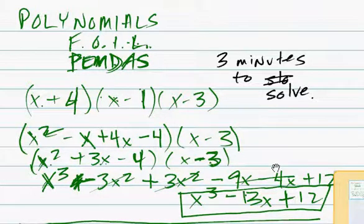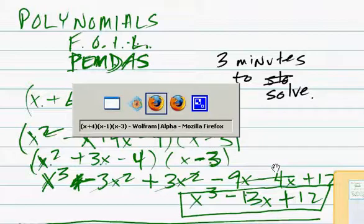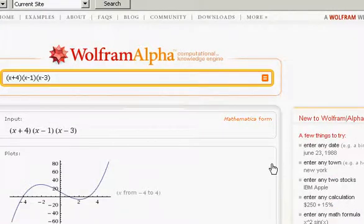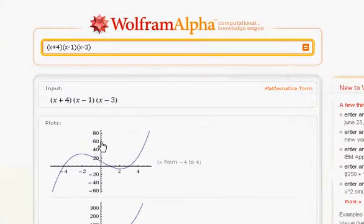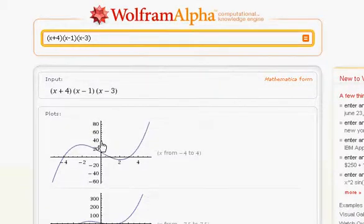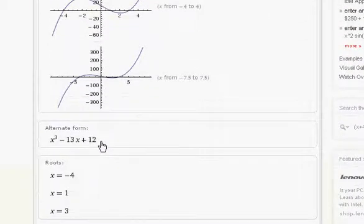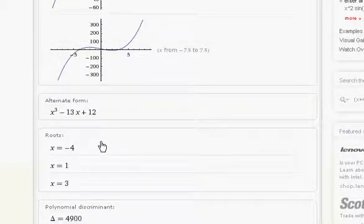Let's take a look at that equation at Wolfram Alpha. There it is, x plus 4, x minus 1, x minus 3. And it generates some very nice plots for us. And there is the answer, x to the third minus 13x plus 12. Same thing we got. There are the various roots: minus 4, 1, and 3.